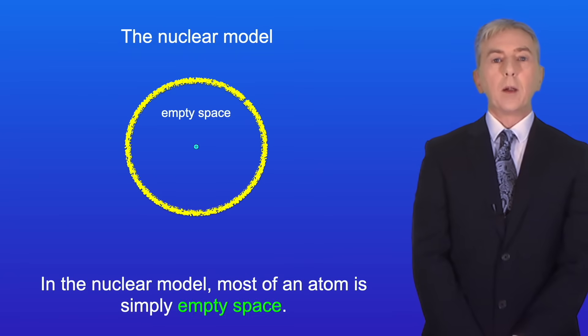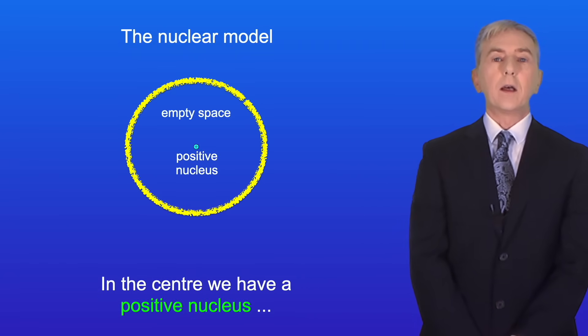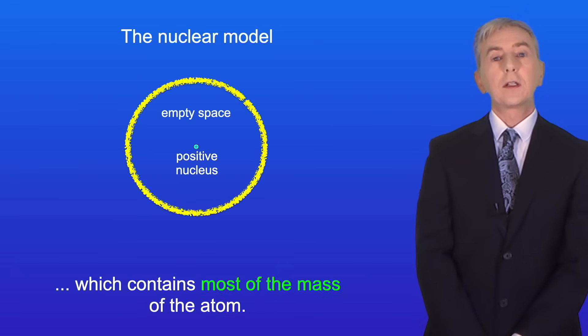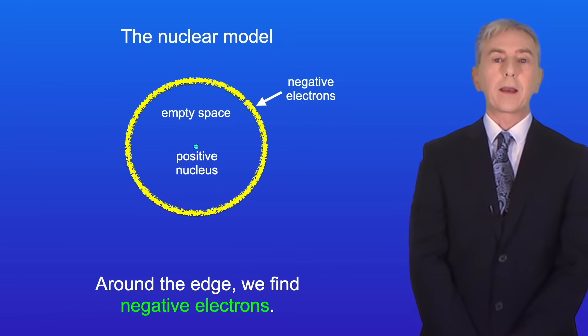In the nuclear model most of an atom is simply empty space. In the center we have a positive nucleus which contains most of the mass of the atom and around the edge we find negative electrons.